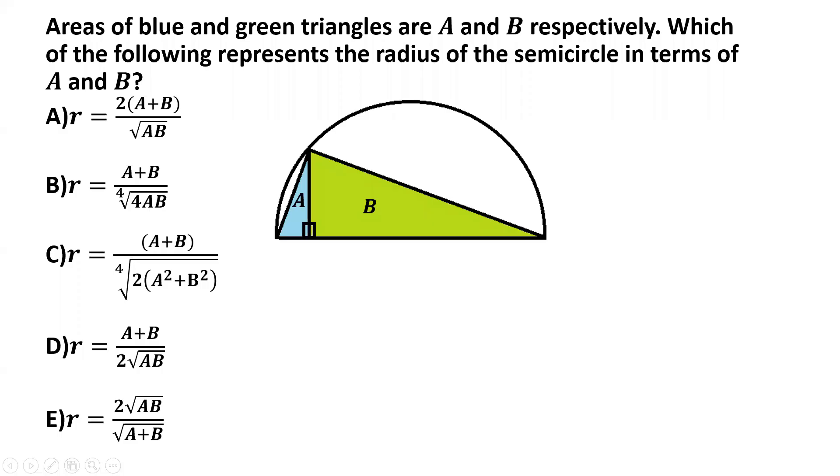Areas of blue and green triangles which are drawn within a semicircle are A and B respectively. Which of the following represents the radius in terms of A and B?